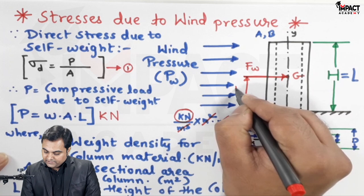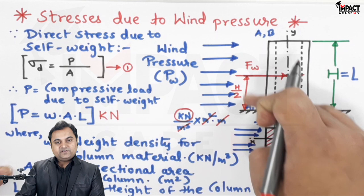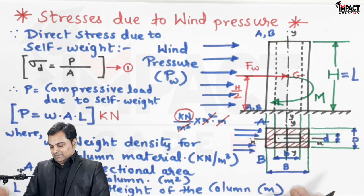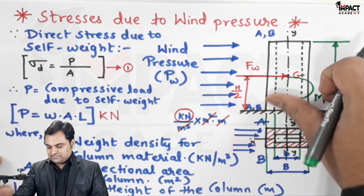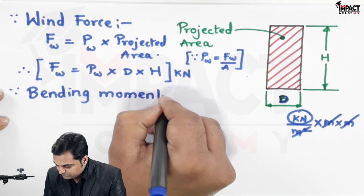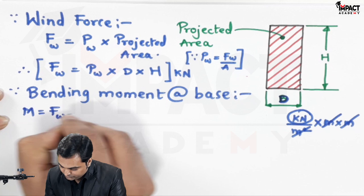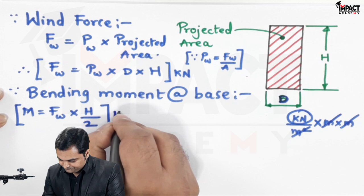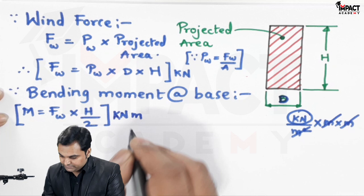Due to this bending moment, if the stresses become negative (tensile), the column will lift from its base, which is not desired. The bending moment M equals F_w × H/2. The unit is kN·m, since force is in kN and height is in meters. After calculating the bending moment, we need the section modulus.